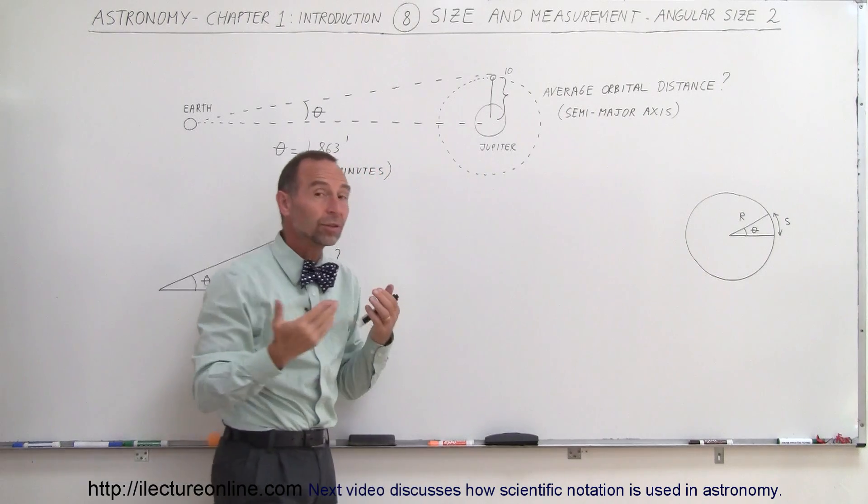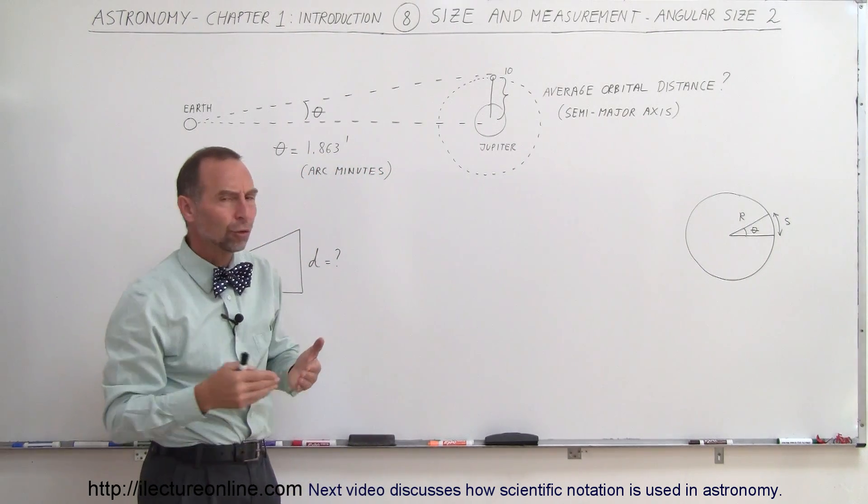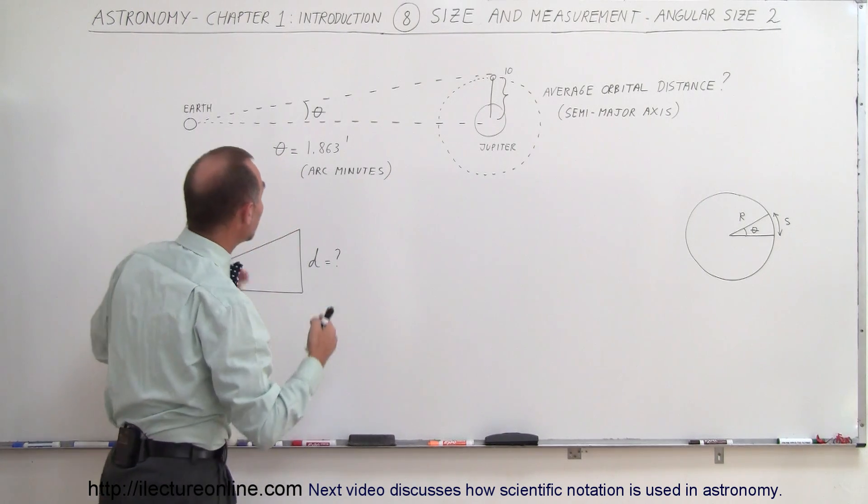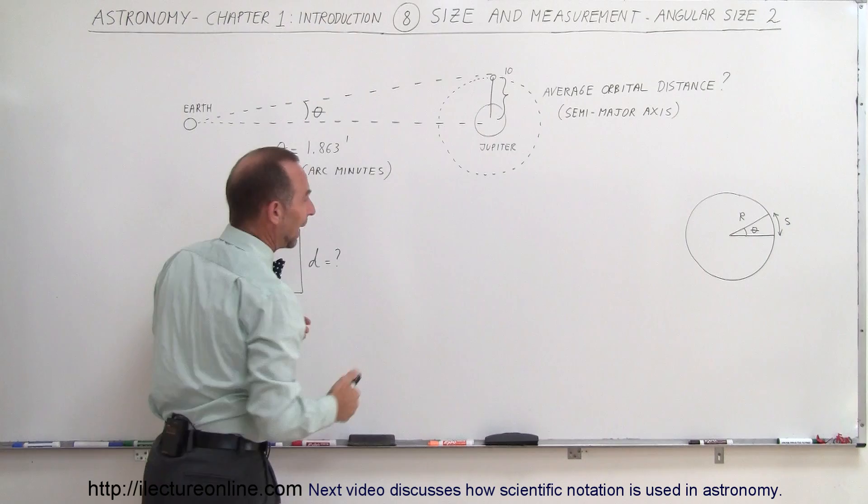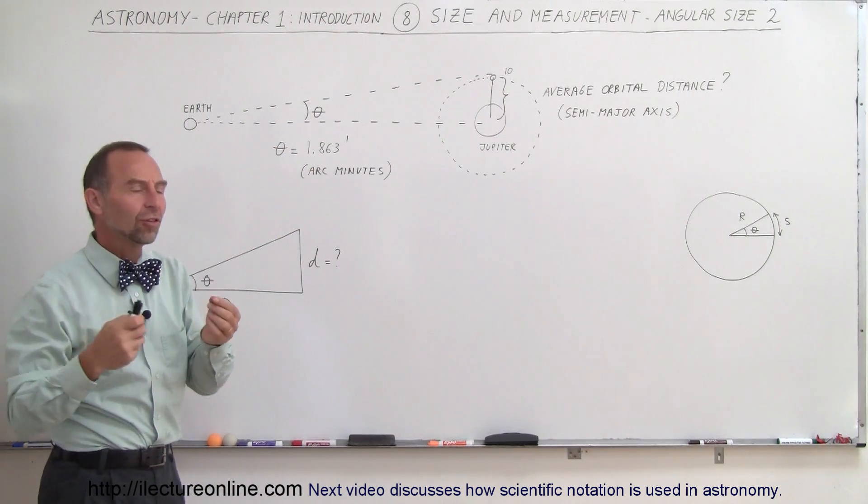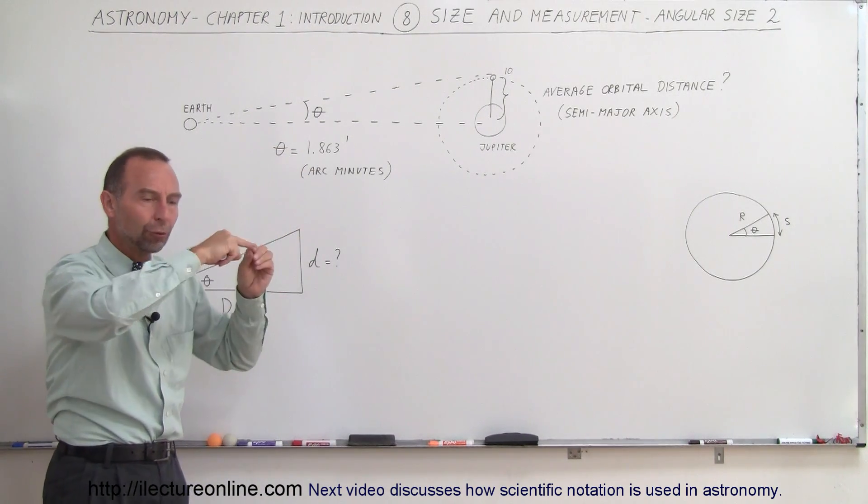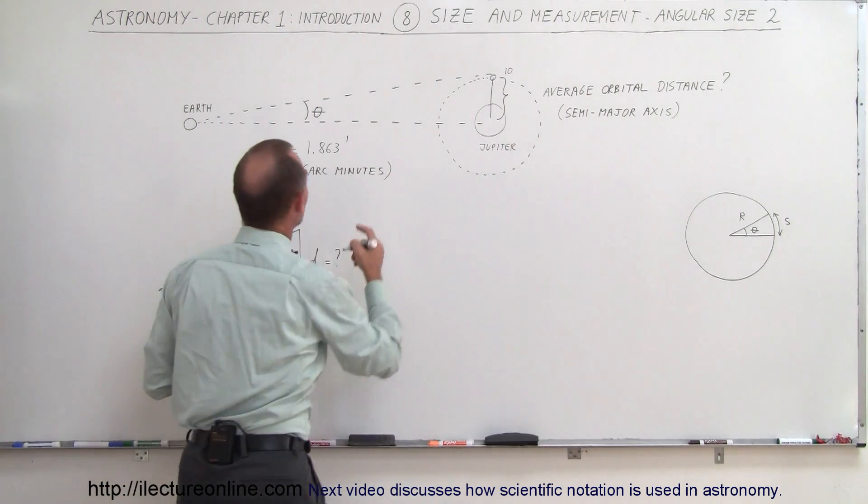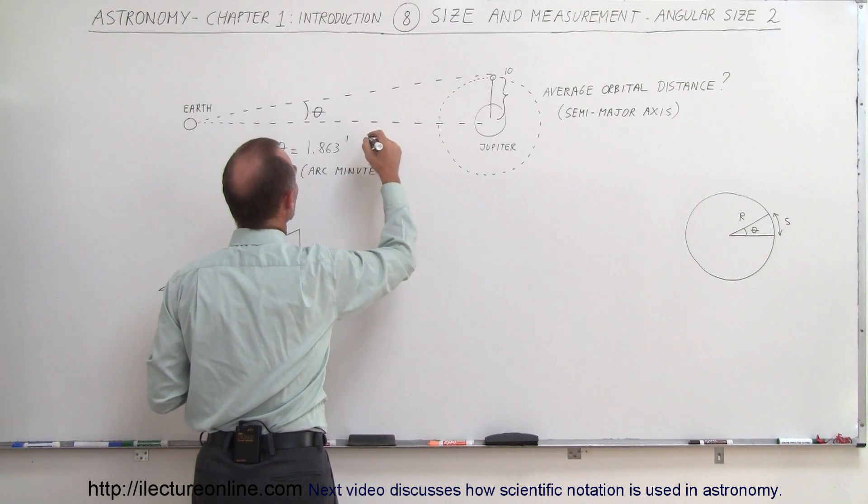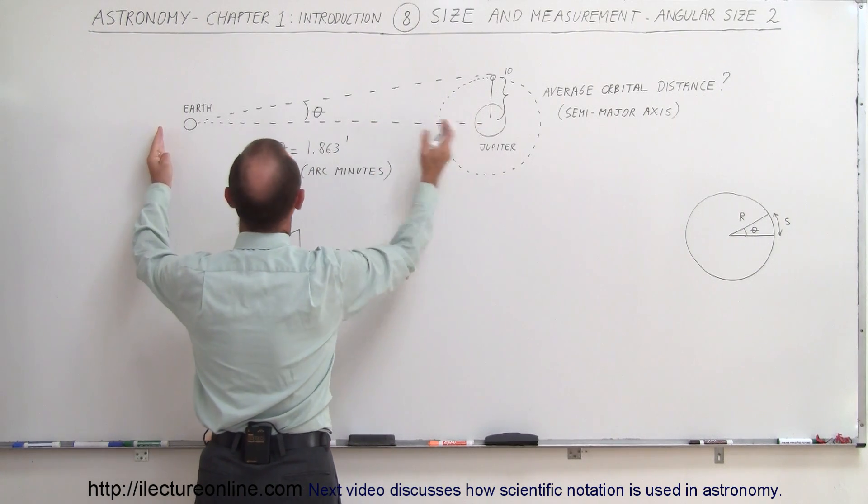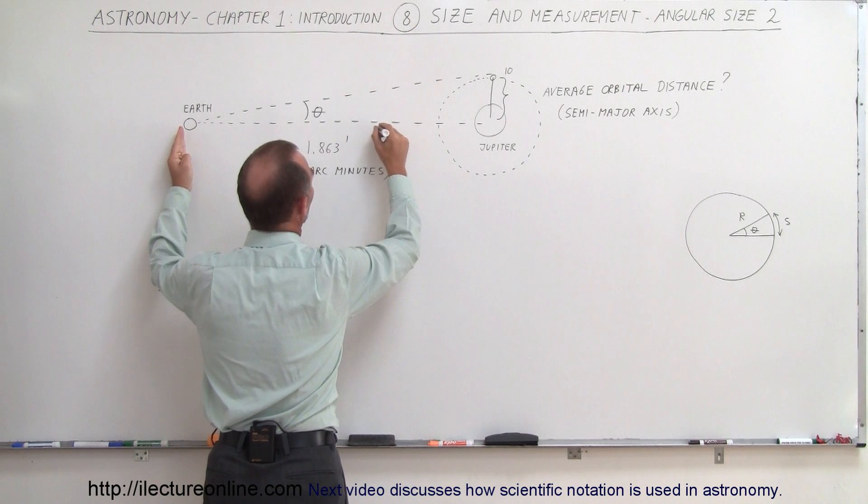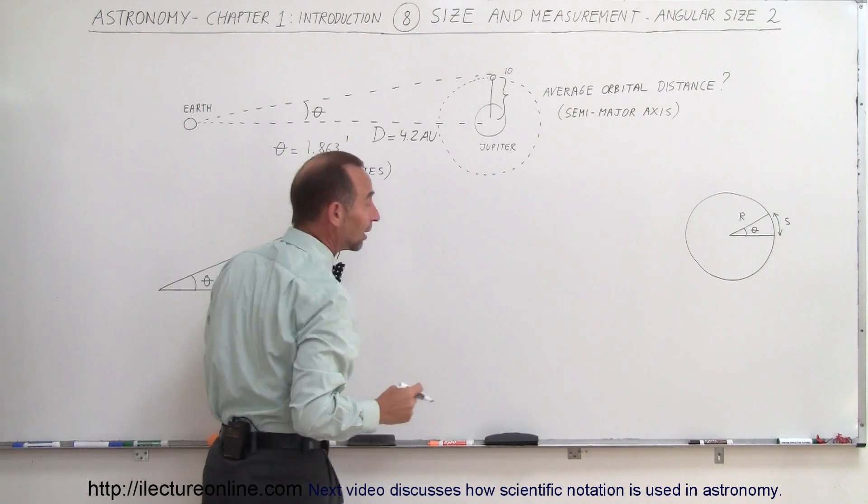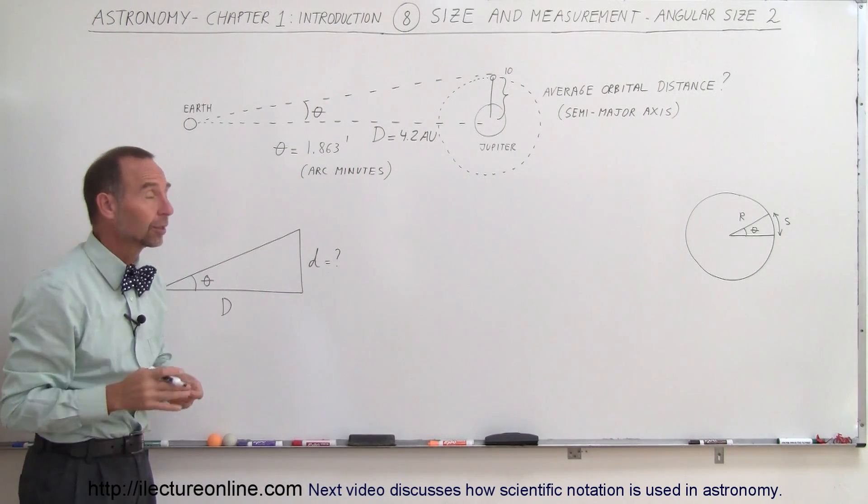In other words, what is the average orbital distance of Io in its orbit around Jupiter, also known as the semi-major axis of its orbit. And if we know that the distance from Earth to Jupiter when Jupiter is at opposition, when the Sun, the Earth, and Jupiter all form a single line, then we know that this distance here is about 4.2 astronomical units. So let's call this distance from Earth to Jupiter big D, and that's equal to 4.2 astronomical units, realizing of course that an astronomical unit is about 93 million miles.